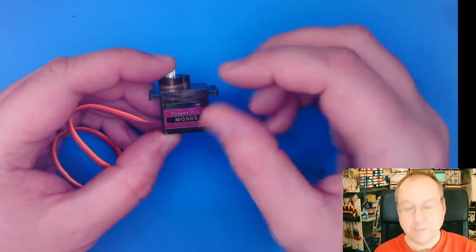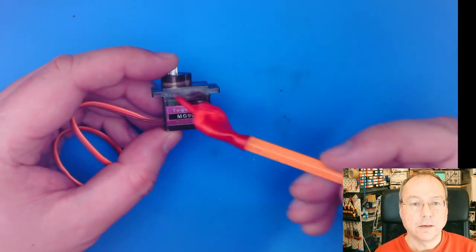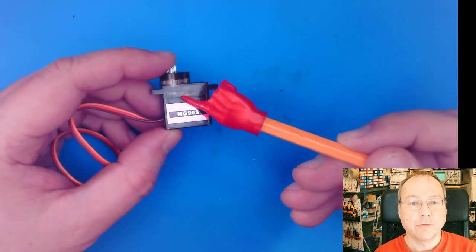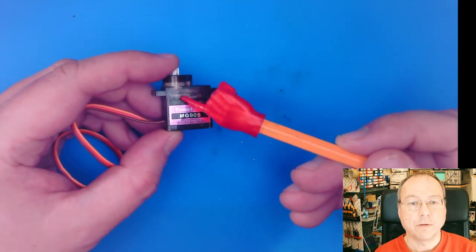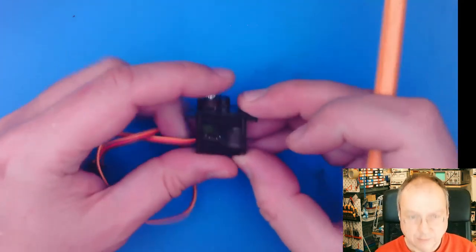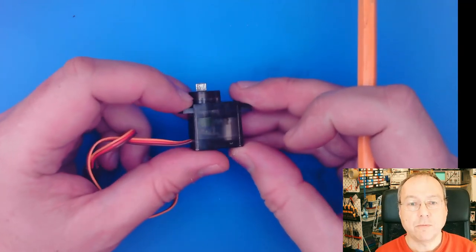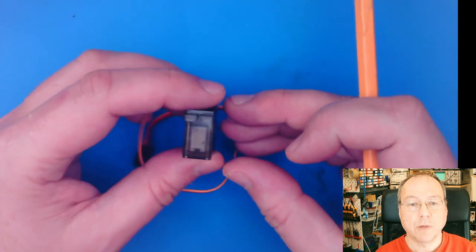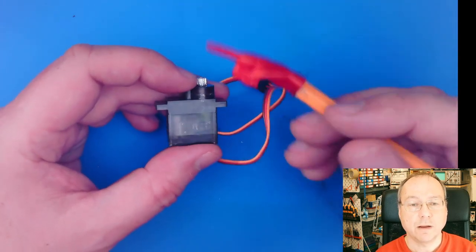I have removed the labels on one of the servo motors so we might actually be able to see some more details. Here to the left you can see the motor, to the right you see the potentiometer which gives feedback, but we don't see so much more.